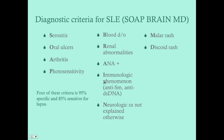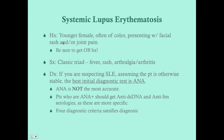On the USMLE, lupus typically presents as a younger female, often of color — Hispanic, Native American, or Black — presenting with a facial rash and/or joint pain. Those are the two most common presentations in exam questions. Remember the triad: rash, joint pain, and fever — that gives you two diagnostic criteria right away. Be sure to get an OB history, looking for spontaneous abortions. Key presenting symptoms: fever, rash, and arthralgia/arthritis.